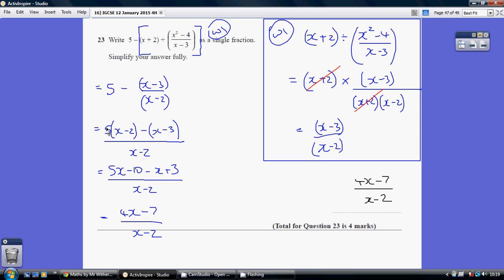So we've now just got to expand and simplify the numerator. 5 times x is 5x. 5 times minus 2 is minus 10. Minus x and plus 3. Be careful, minusing a minus 3 is plus 3. Then gather up our terms. 5x minus x is 4x. Minus 10 add 3 is minus 7. So we have 4x minus 7 over our x minus 2 final answer.